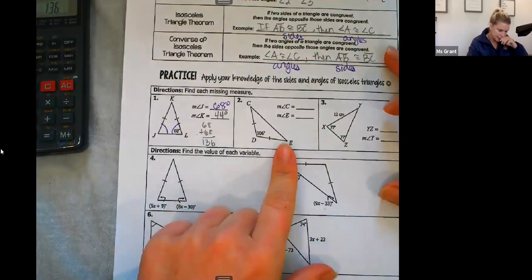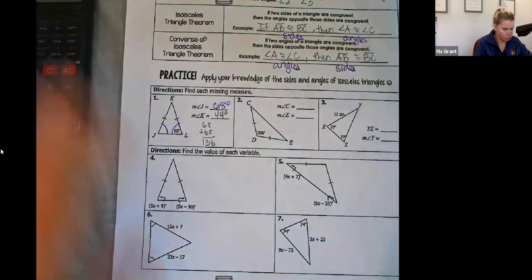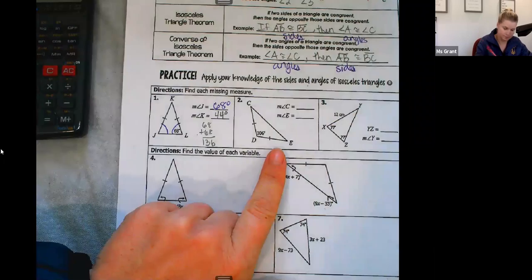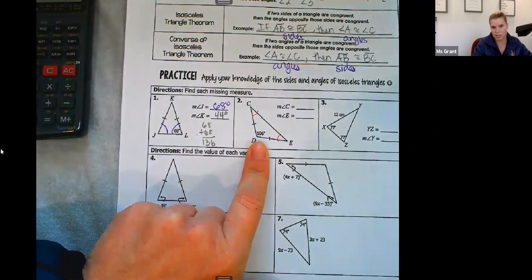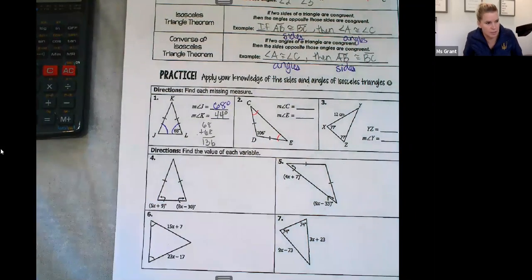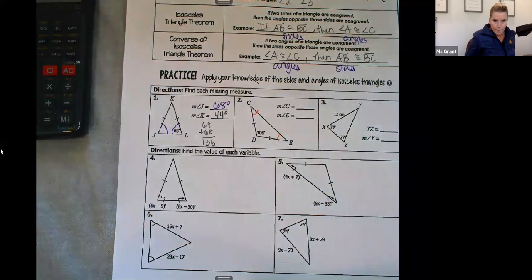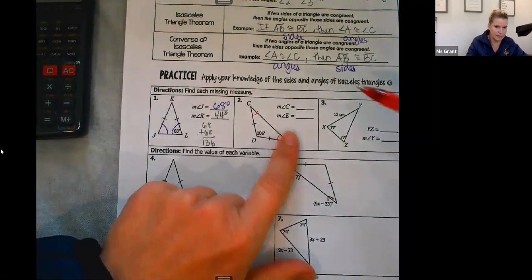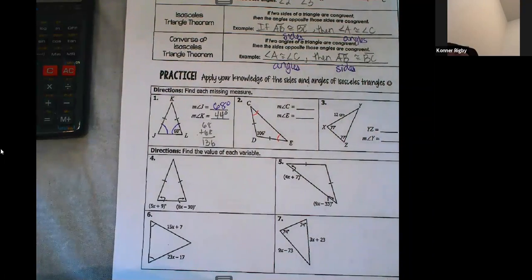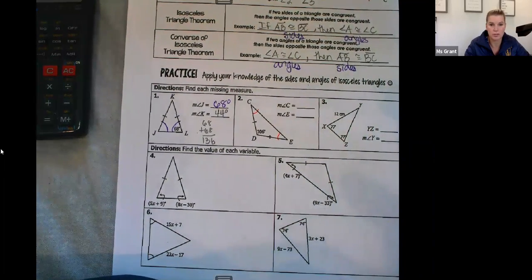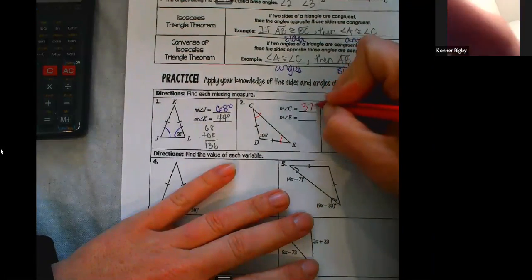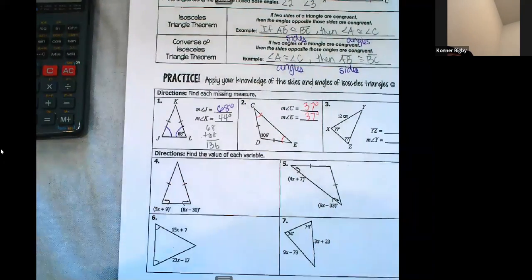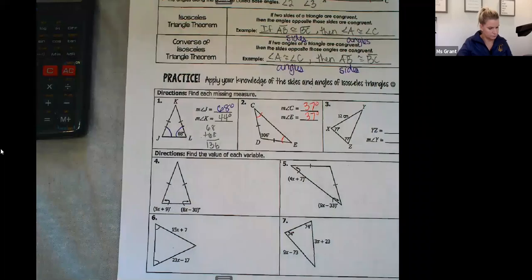Perfect. Number two. Angle C. I don't know, but I do know that the vertex angle is 106 and the other two must equal each other. C and E must equal each other. Connor, what do you think about C and E? 36 degrees. Oh, so close. Like, so 37. All right.